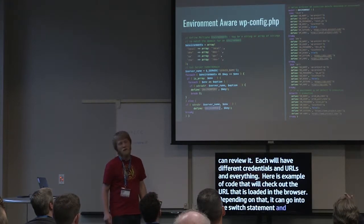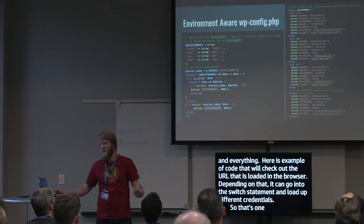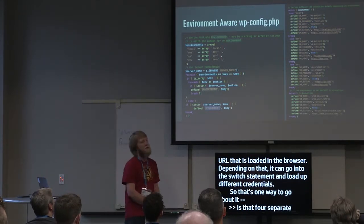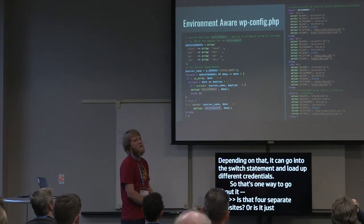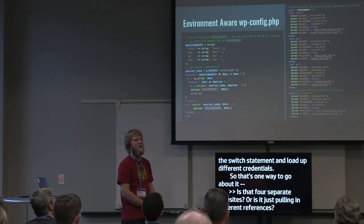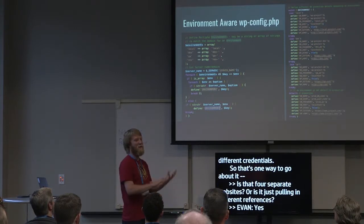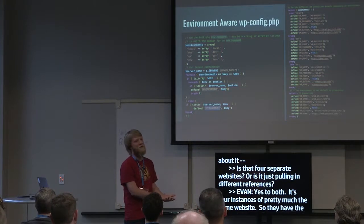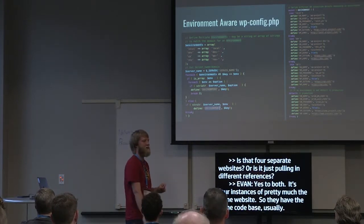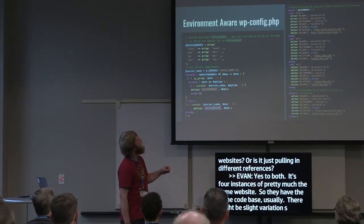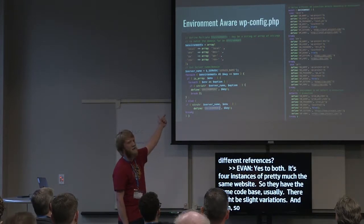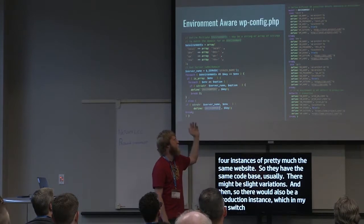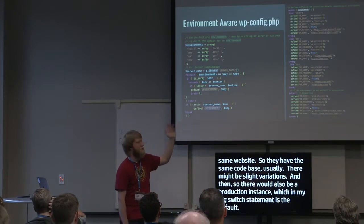Each of these instances would have different database credentials and URLs. Here's some code that checks the URL loaded in the browser and uses a switch statement to load up different database credentials depending on the environment. There would also be a production instance — in the switch statement, that's the default: if it doesn't match any of these, it defaults to production.